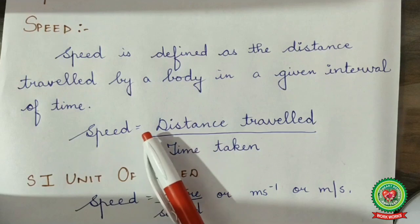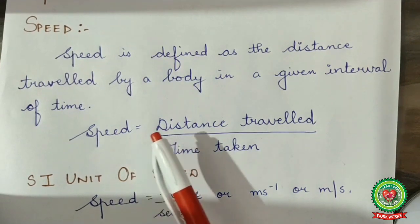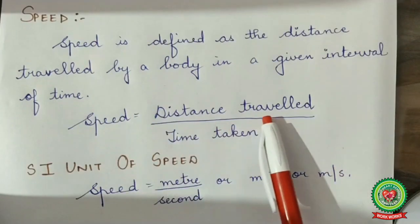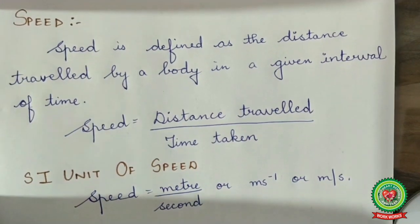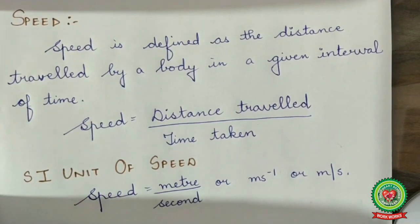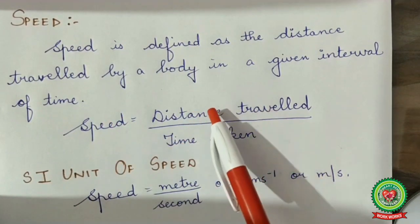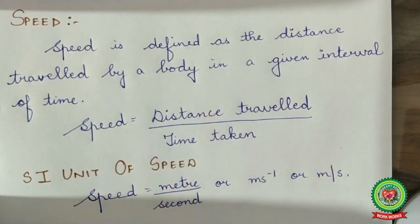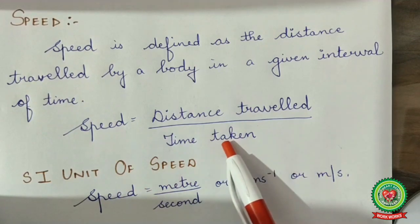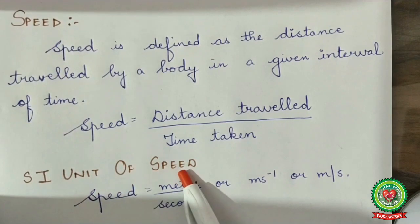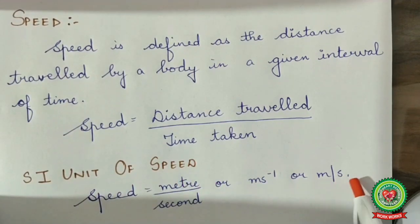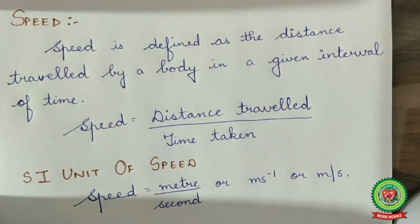The expression for speed is: speed is equal to distance travelled over time taken. The SI unit of distance is meter and the SI unit of time is second, so the SI unit of speed is meter per second, written as m/s or ms⁻¹.